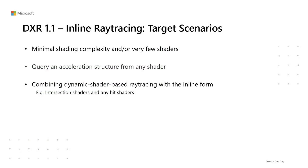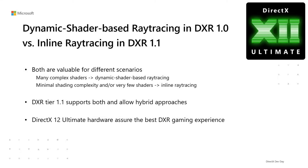Inline ray tracing can be useful for many reasons. Perhaps the developer knows the scenario is simple enough that the overhead of dynamic shader scheduling is not worthwhile — for example, a well-constrained way of calculating shadows. It can also be convenient and efficient to query an acceleration structure from a shader that doesn't support dynamic shader-based rays, like a compute shader. It might also be helpful to combine dynamic shader-based ray tracing with the inline form. Some ray tracing stages, like intersection shaders and any-hit shaders, don't even support tracing rays via dynamic shader-based ray tracing, but the inline form is available everywhere. Scenarios with many complex shaders will run better with dynamic shader-based ray tracing, as opposed to massive inline ray tracing uber shaders.